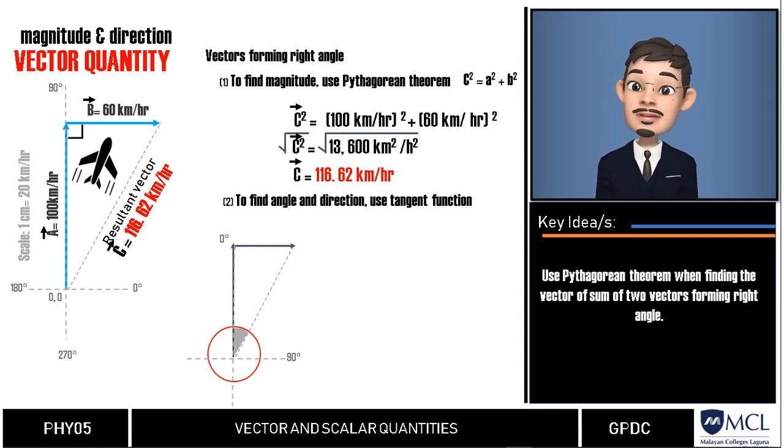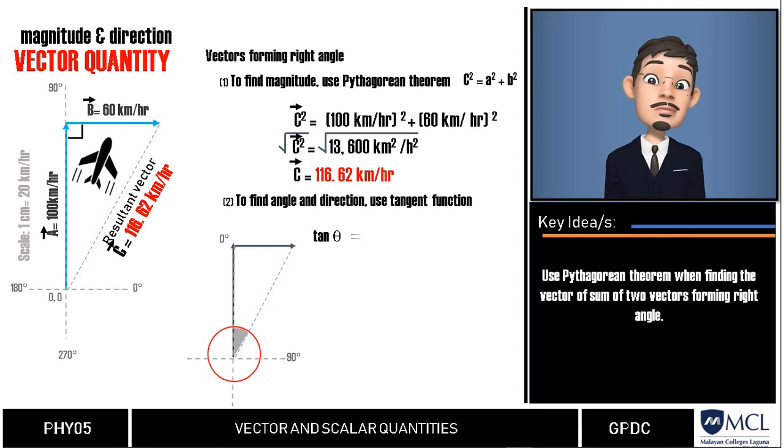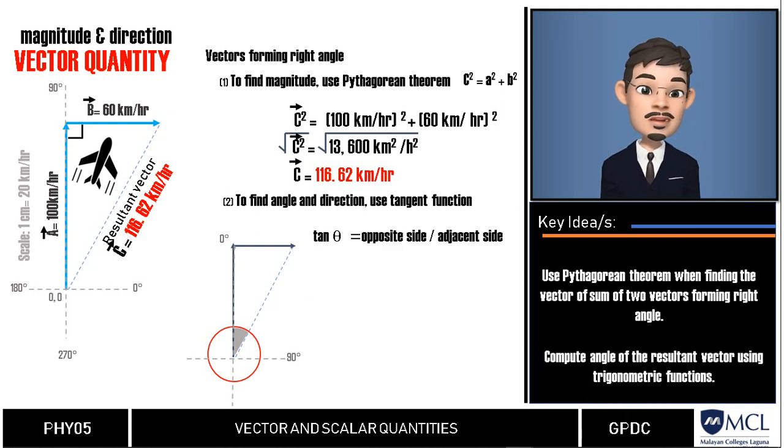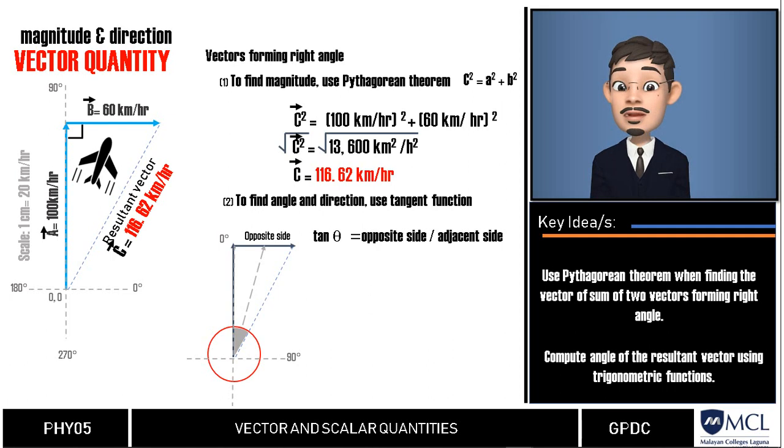Let us use a tangent function, opposite side over adjacent side. In your math class, we know that this is our opposite side because this side here is the opposite of the angle you want to know. Then the longest one, the diagonal one, the resultant vector is the hypotenuse and therefore, the remaining one will be the adjacent side.